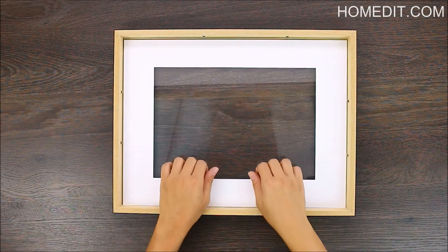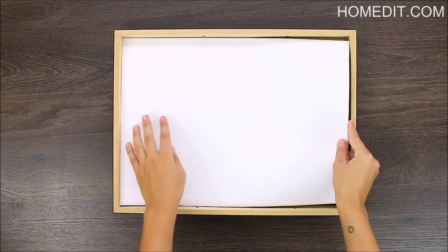Start with a glass frame and substitute the matting and any contents with a plain piece of Bristol board behind the glass.